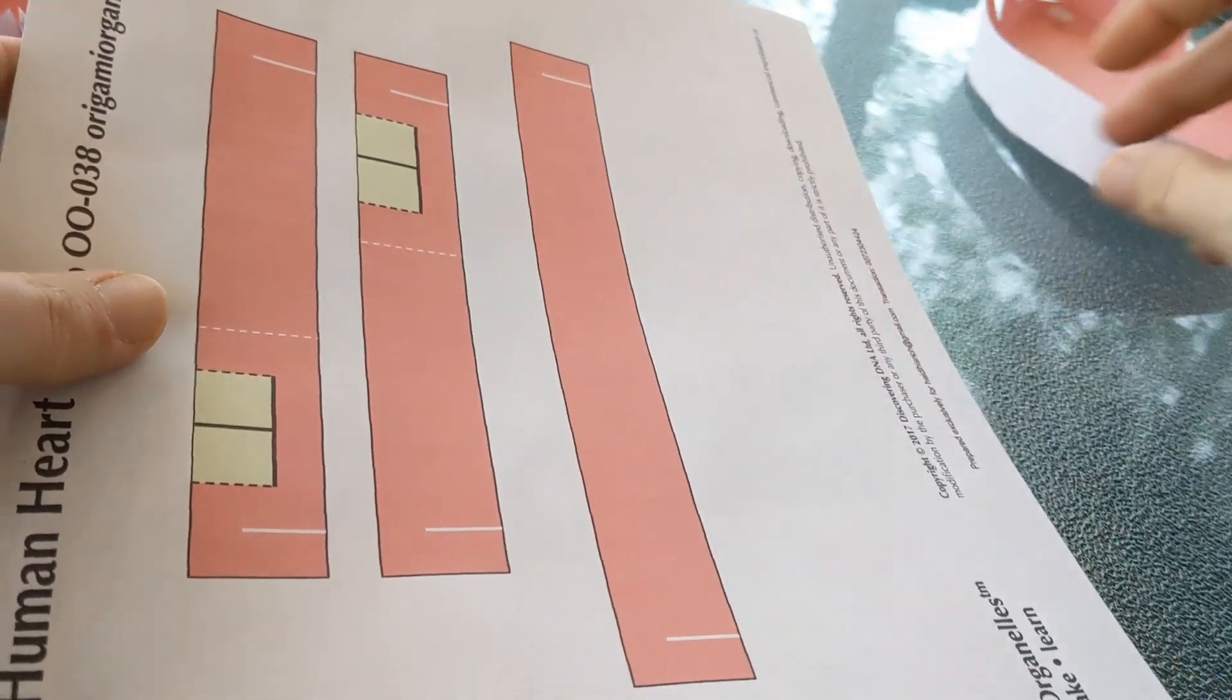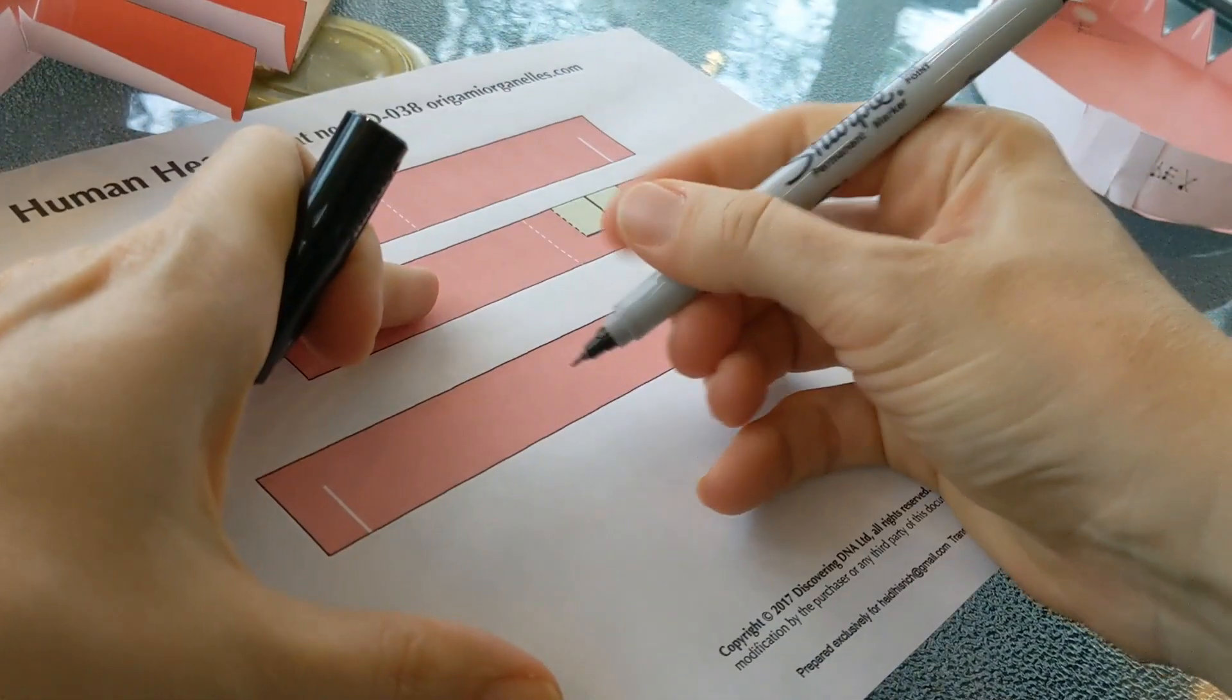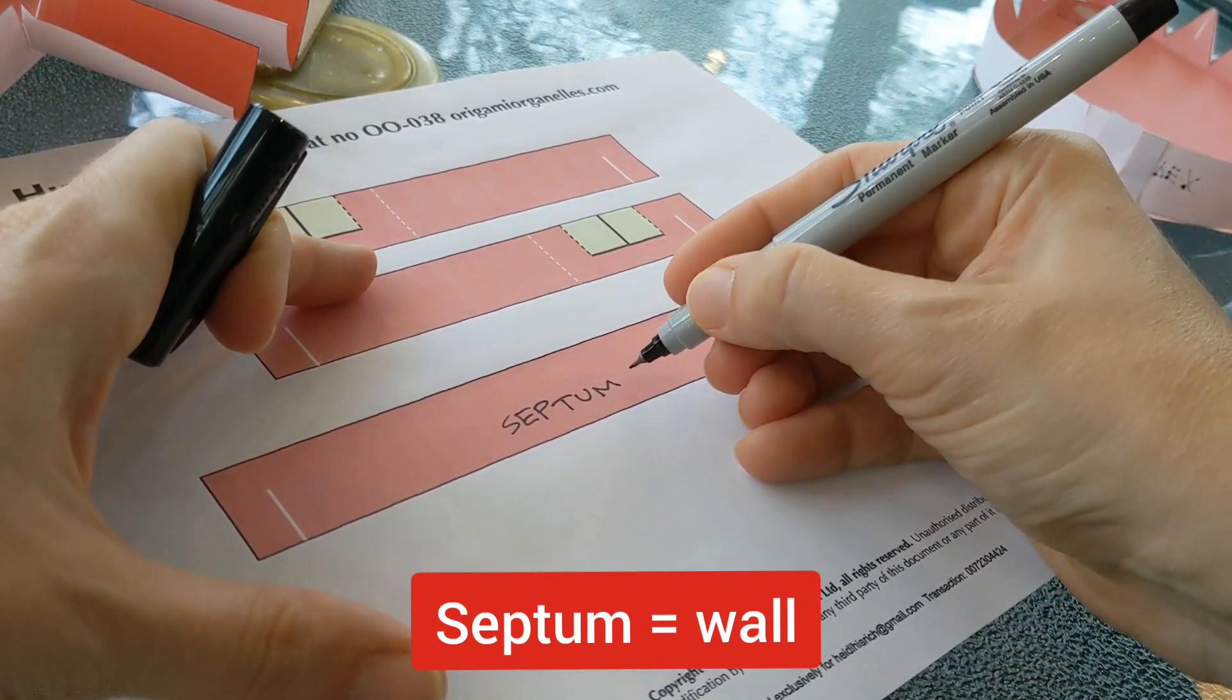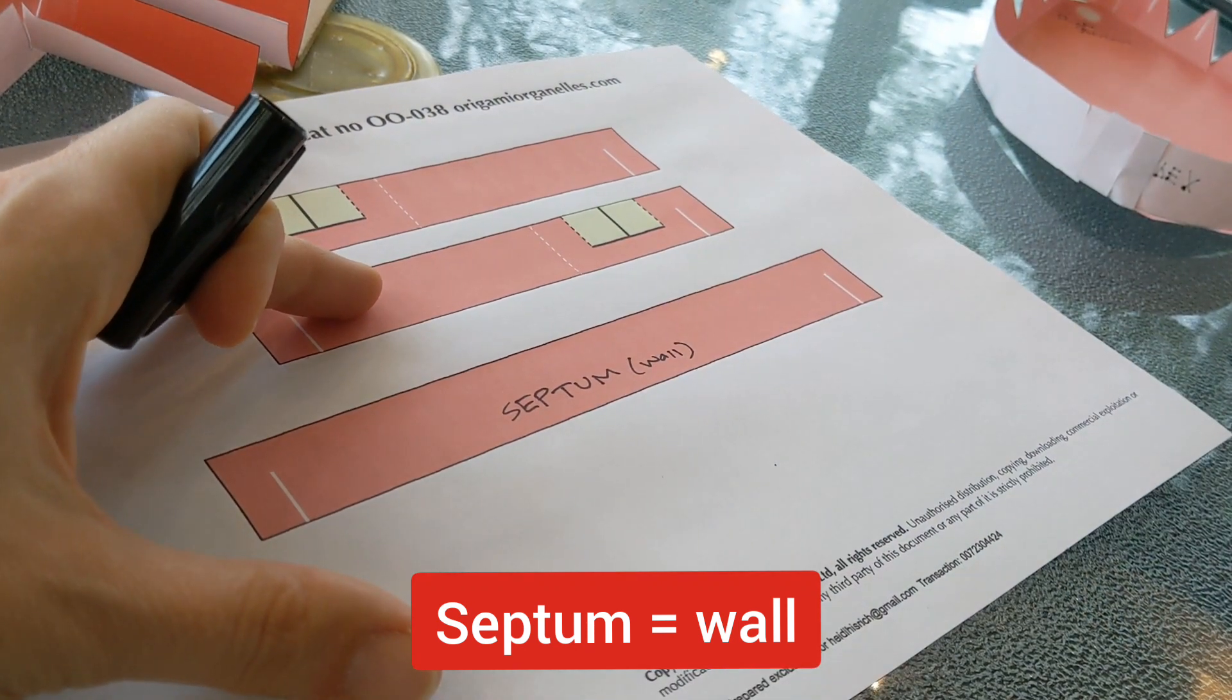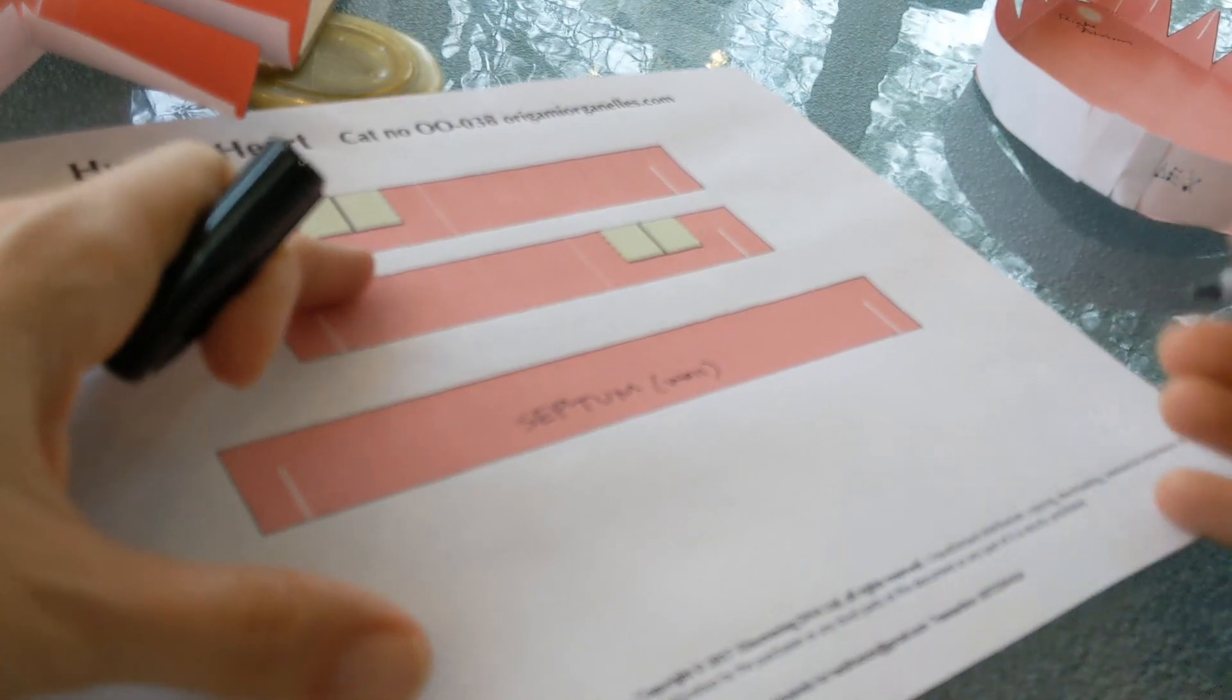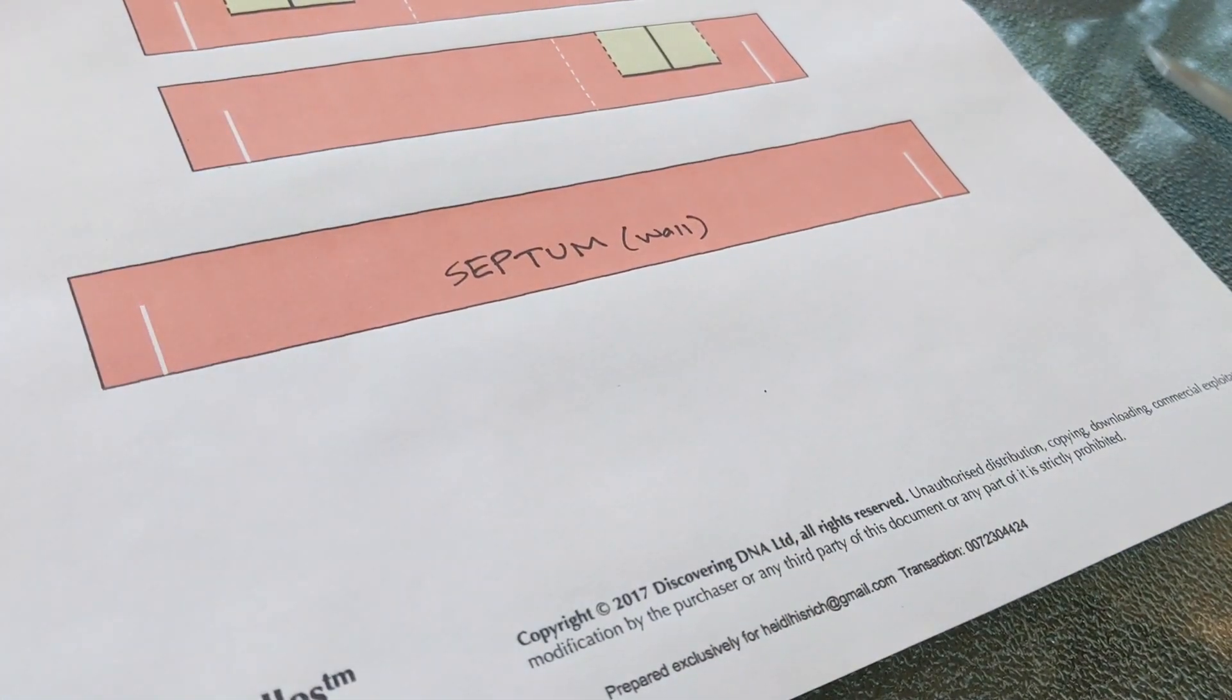Now we're going to cut out the piece that represents the septum. But before we do that I'm going to go ahead and label this the septum. And septum means wall. One way that I remember this is that between the two sides of your nose there is a septum. So that area between your two nostrils is also a septum. So this is going to be the wall that separates the left and right side of the heart. So let's go ahead and cut out the septum.